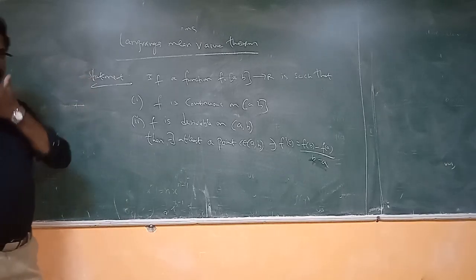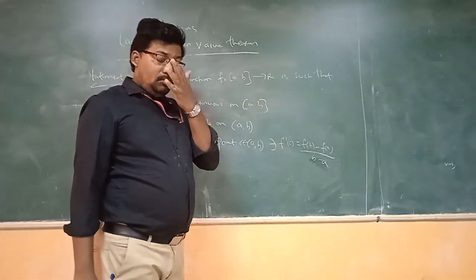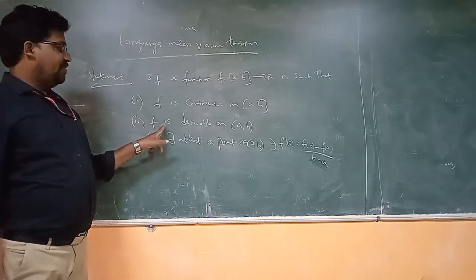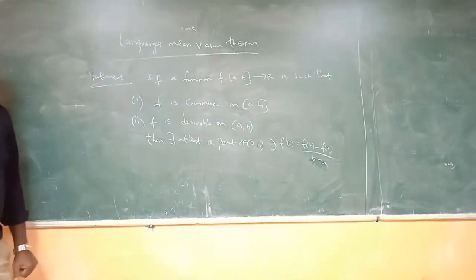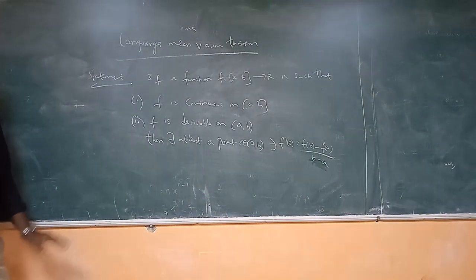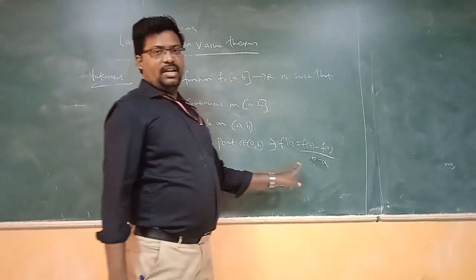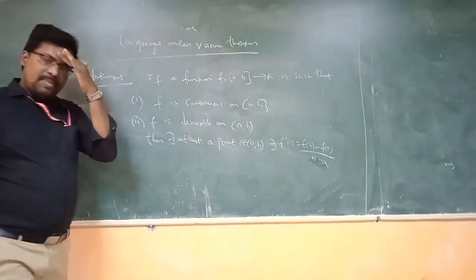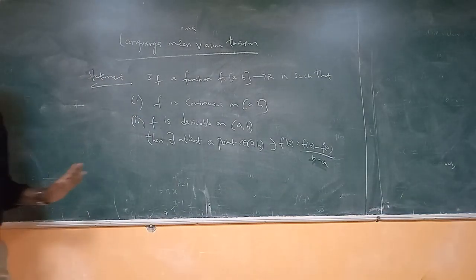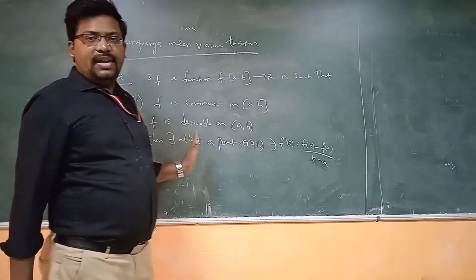A function f maps closed interval [a, b] to R such that if it is continuous on [a, b], then there exists a point c in [a, b] such that f'(c) equals f(b) minus f(a) by b minus a. This is the statement of Lagrange's Mean Value Theorem.